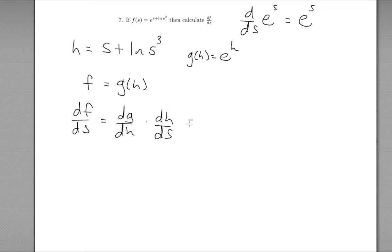Now to take the derivative of f with respect to s, we can use the chain rule. It says the derivative of f with respect to s is the derivative of g with respect to h, times the derivative of h with respect to s. The derivative of e to the power of h with respect to h — now we can use the formula — is just e to the power of h.